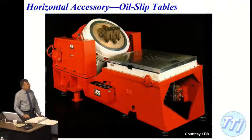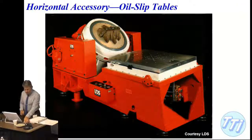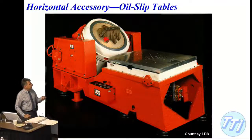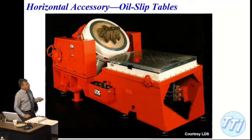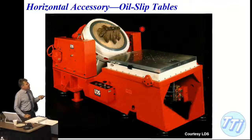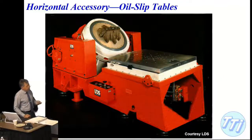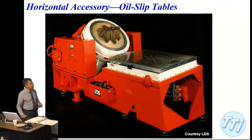Here's an example of a shaker — we'll see this picture again. This shaker shakes up and down axially. If you rotate it over and attach it to a slip table — this plate — the plate can slide back and forth horizontally. So you can get both horizontal and vertical motion out of one machine.